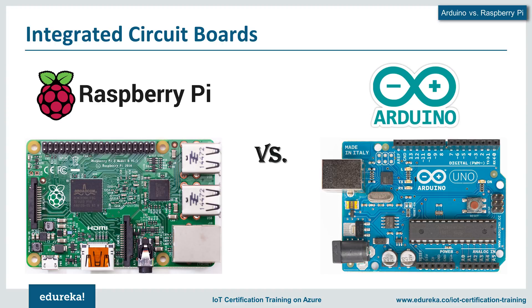These motherboards are integrated circuits, and with the world trying to minimize the size of devices and make them more portable, we now have a variety of similarly capable circuit boards available to help us build smart equipment. The smartest development boards today are the Raspberry Pi and the Arduino — both integrated circuit boards that may have a few things in common but differ majorly in their mode of operation and capabilities.